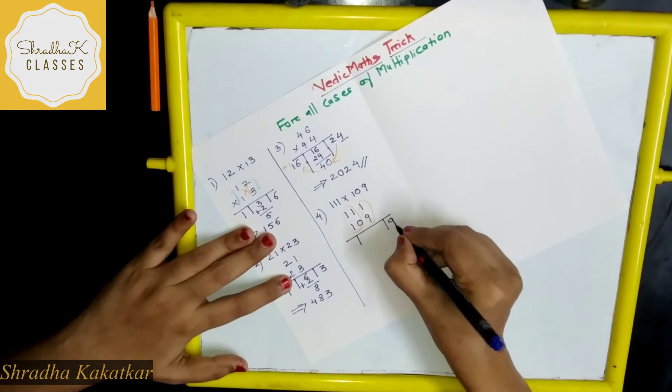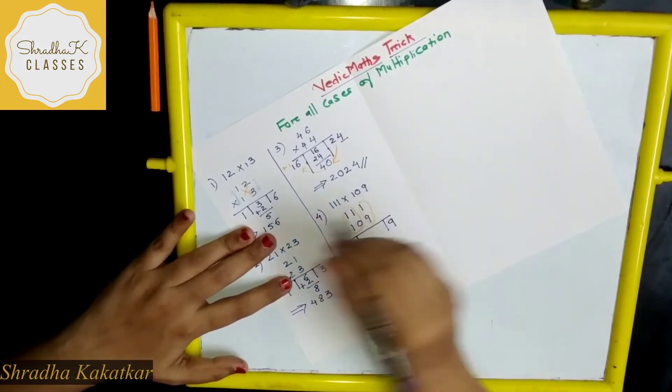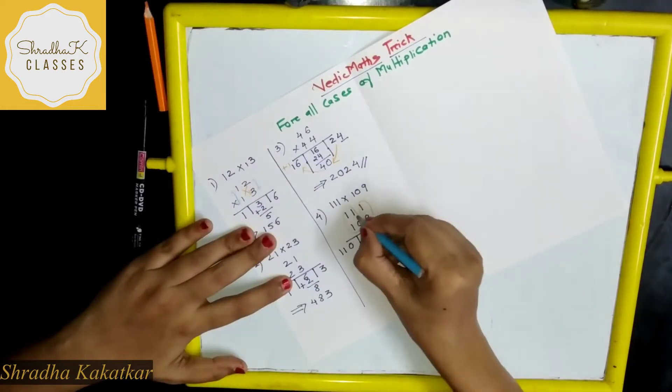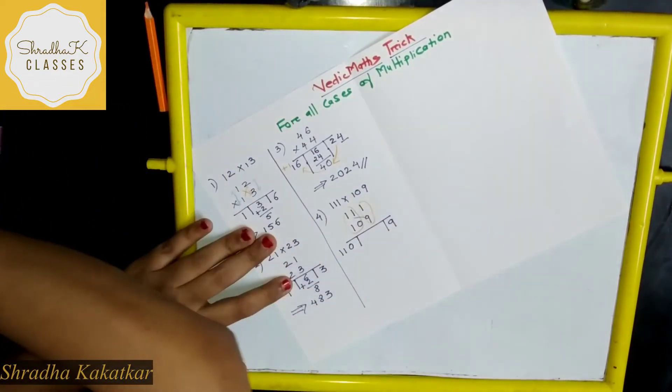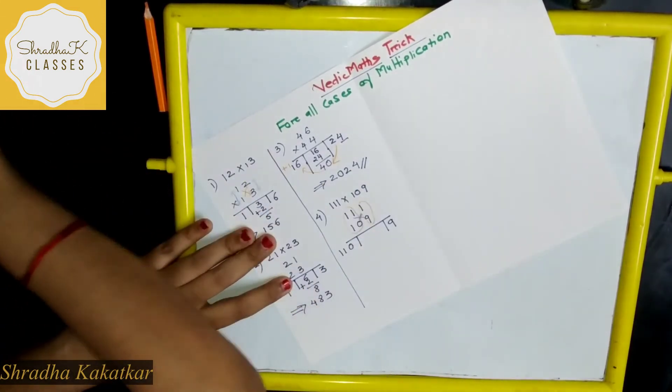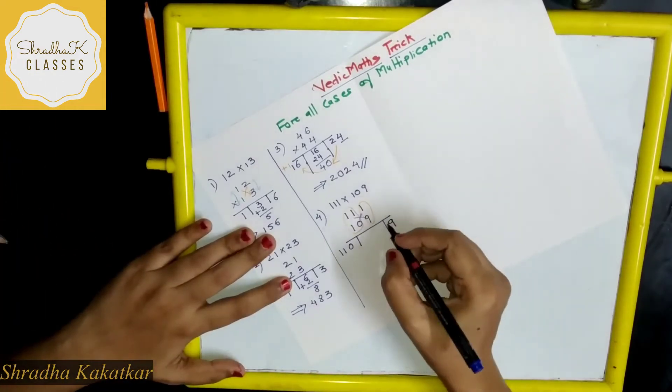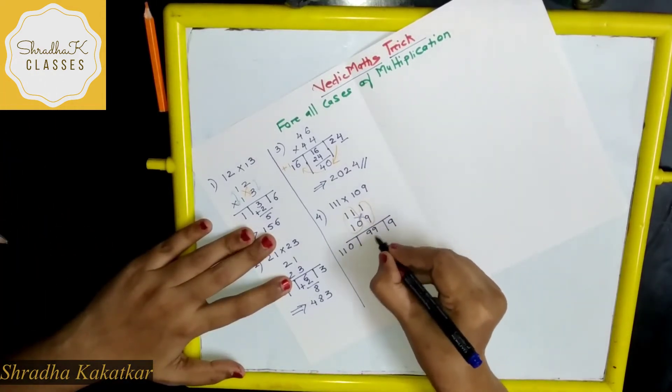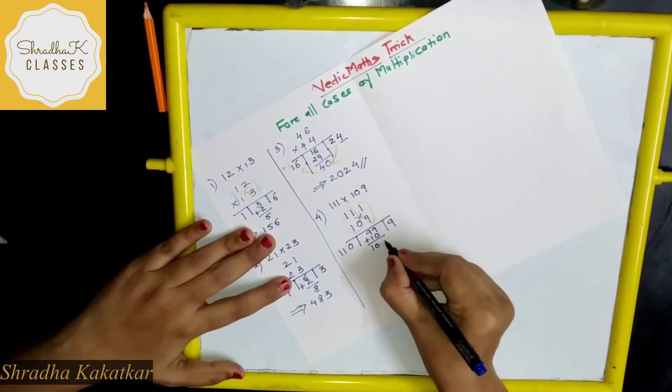Now 9 into 1. Then 11 into 10, 110. Then cross multiply. Cross multiply. Cross multiply these numbers. 99 plus 10. This will come to 10 and 9.